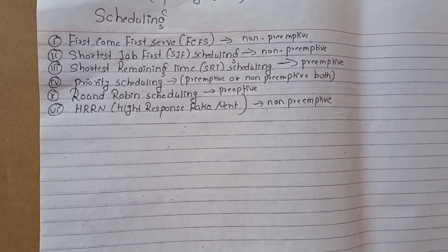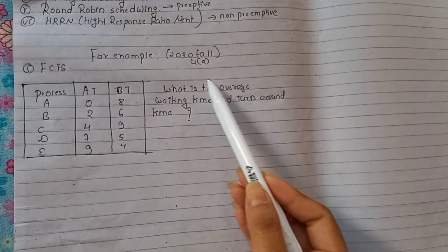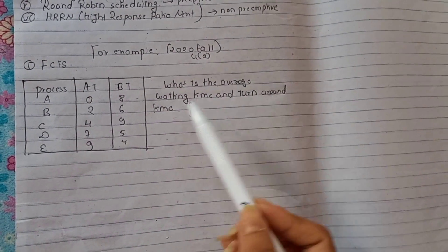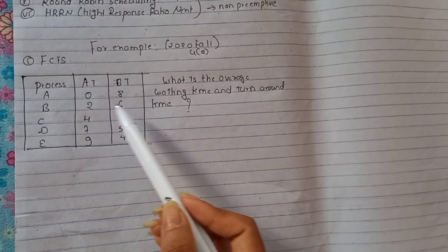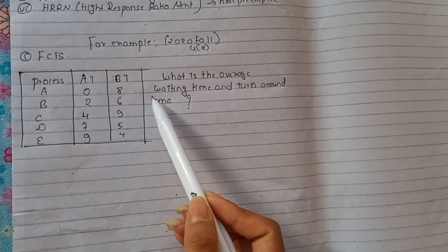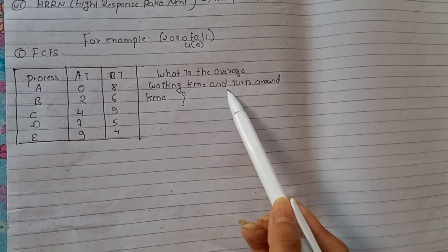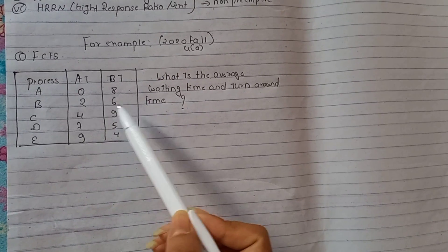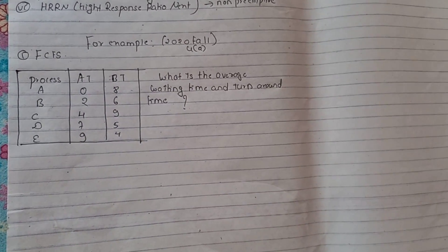Let's start from the examples. This is an example from the 2020 fall exam. Question number 4 gives us a set of processes with arrival times and burst times. We need to find the average waiting time and turnaround time. We start with FCFS — First Come First Serve scheduling.